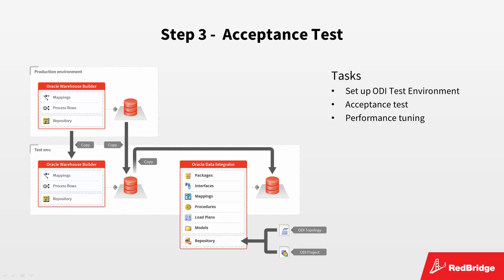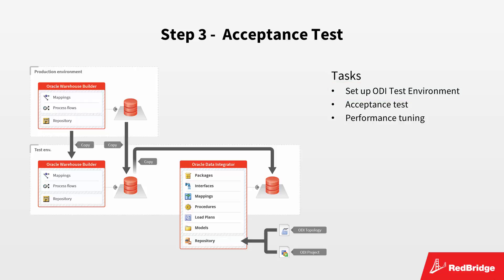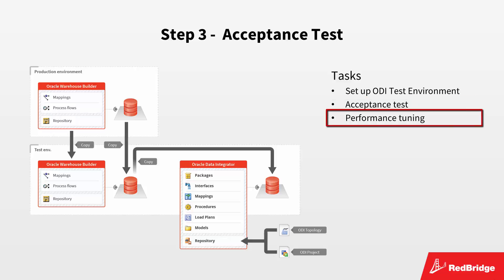Once everything has been successfully tested, it's time to test the ODI mappings and load plan in your own test environment. First, the test environment needs to be set up. This includes installing ODI, importing the XML files resulting from the conversion, and copying the databases. We assume that OWB is already present and configured in your test environment. Next, the new ODI project will be tested to ensure that there are no regression issues. And finally, the ODI project's performances will be tuned with the database administrator.